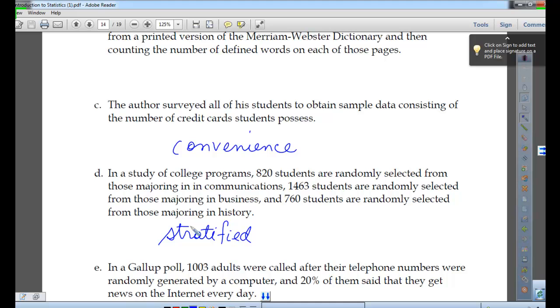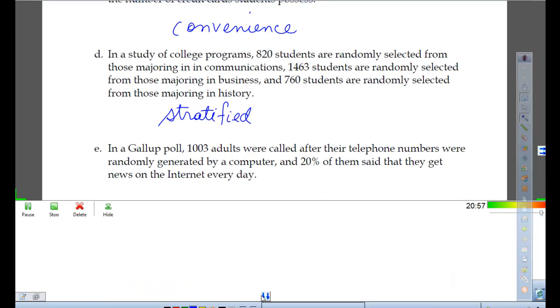In a Gallup poll, 1,003 adults were called after their telephone numbers were randomly generated by a computer and 20% of them said that they get news on the internet every day. Random. Very good. Just a random sample.